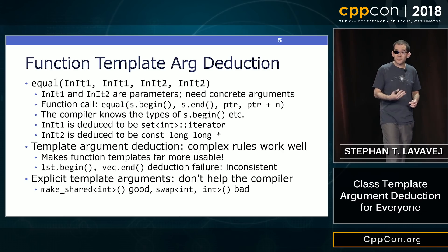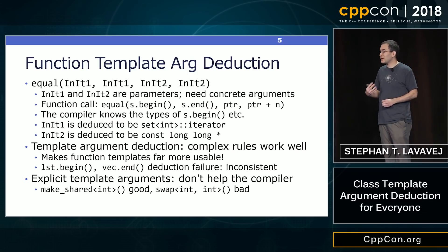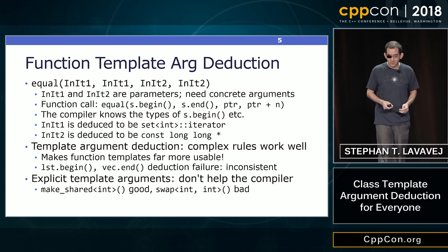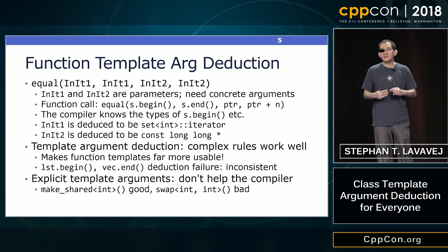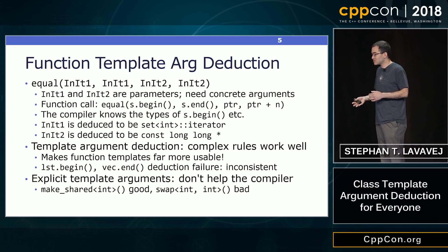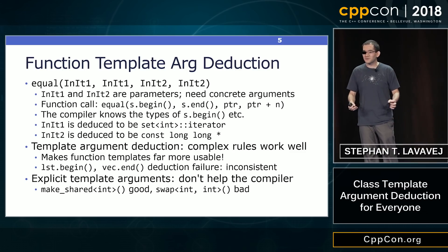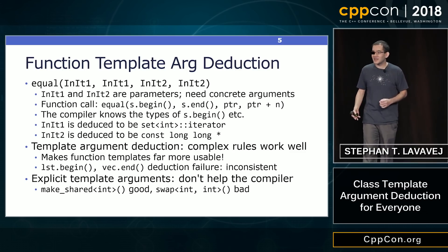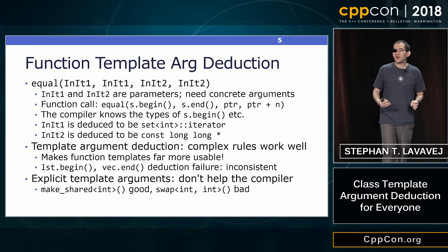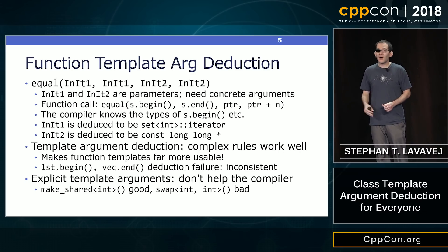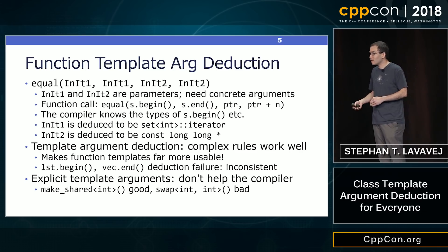Imagine if every time you called an STL or other function template, you needed to provide all of the arguments in angle brackets — that would be horrible. It would also limit evolution of the library. Between C++03 and C++11, we were able to add move semantics, so lots of things that used to be a certain type in C++03 became perfect forwarding or rvalue references in C++11. This especially affected std::pair, and was possible only because the vast majority of users were not passing explicit template arguments.